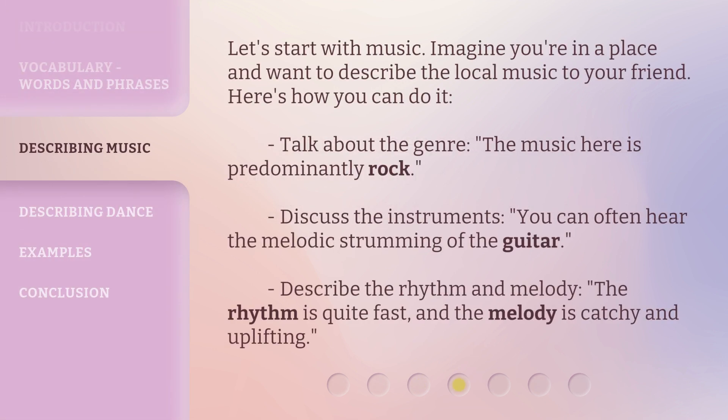Let's start with music. Imagine you're in a place and want to describe the local music to your friend. Here's how you can do it. Talk about the genre: 'The music here is predominantly rock.' Discuss the instruments: 'You can often hear the melodic strumming of the guitar.' Describe the rhythm and melody: 'The rhythm is quite fast, and the melody is catchy and uplifting.'